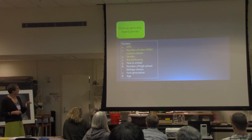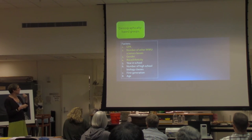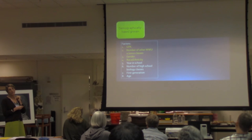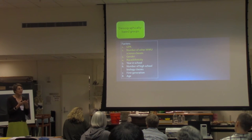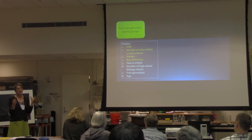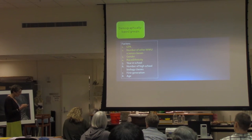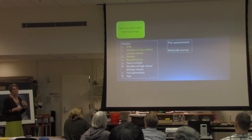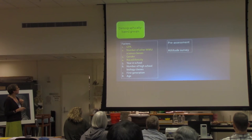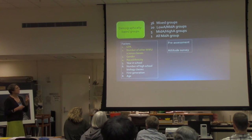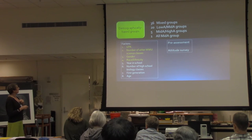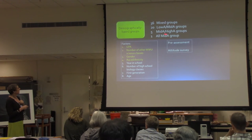We initially used GPA and number of science classes to assign students to groups, and then balanced within those groups for gender and race/ethnicity. Literature shows it's better for minority students or gender minorities not to be isolated in a group — having an ally within the group matters. After giving the pre-assessment and examining the resulting group distributions, we have 36 completely mixed groups, 20 low-mid groups, five mid-high groups, and one all-mid group across two sections this quarter.